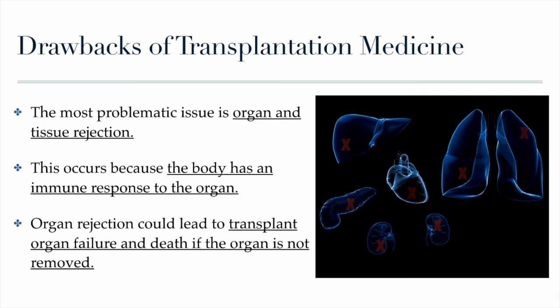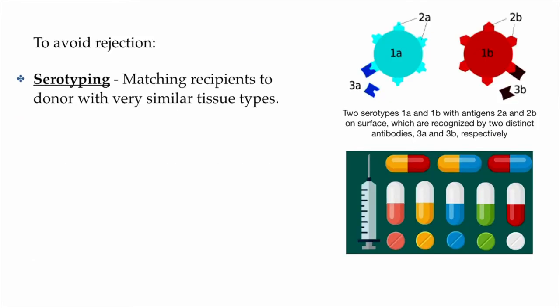Organ rejection can lead to transplant failure and death if the organ is not removed. To reduce the chance of rejection, the first thing done is serotyping — the process by which recipients are matched to donors based on similar tissue types. Most often, siblings are the ones most likely to be a match for a patient through serotyping.